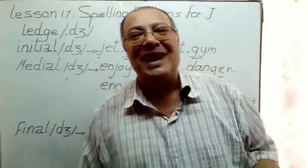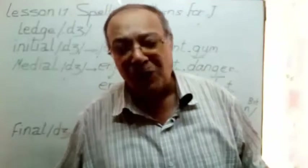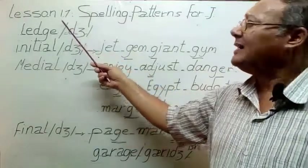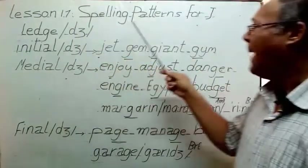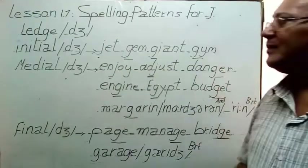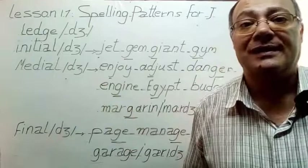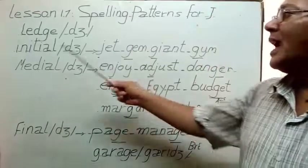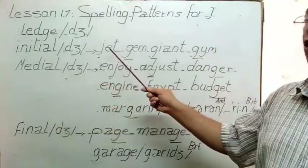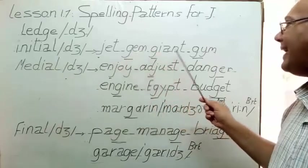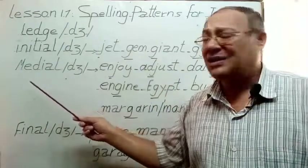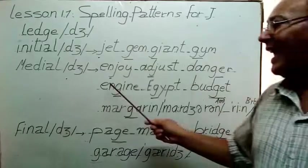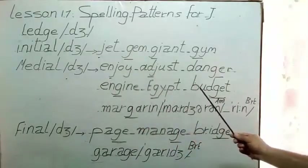In the name of God Almighty. Hello everybody, how are you? I hope you're quite well. This is Lesson 17, a spelling pattern for the letter J. Examples include: jet, jam, giant, Jim, enjoy, adjust, danger, engine, Egypt, budget, manual.